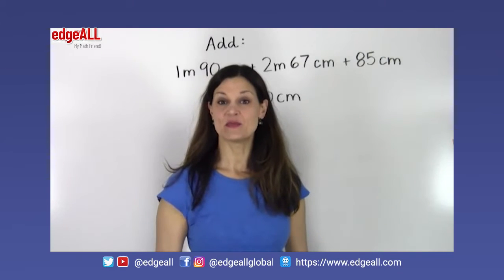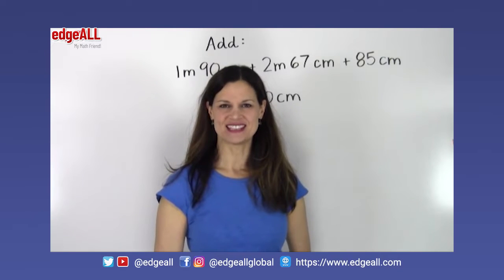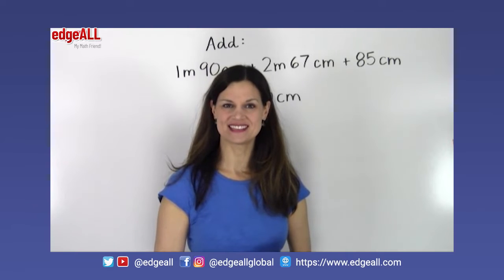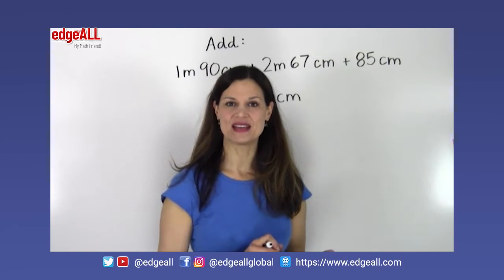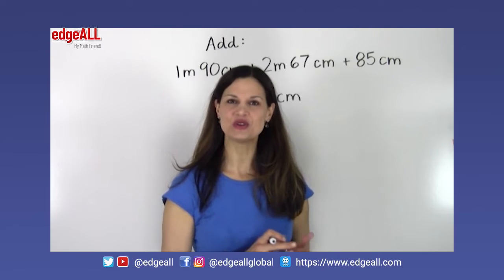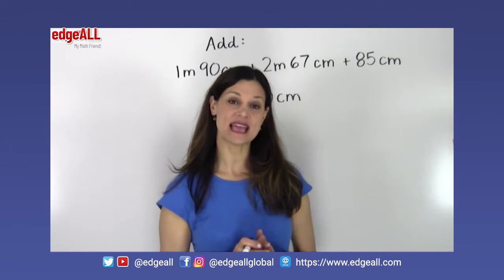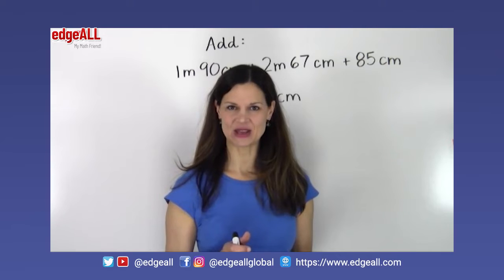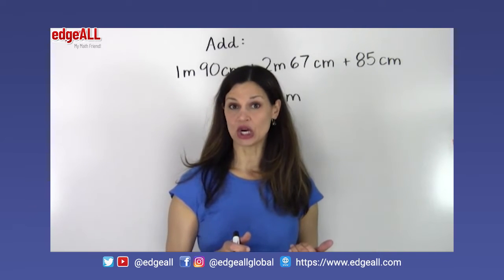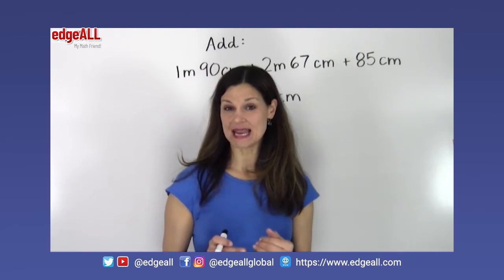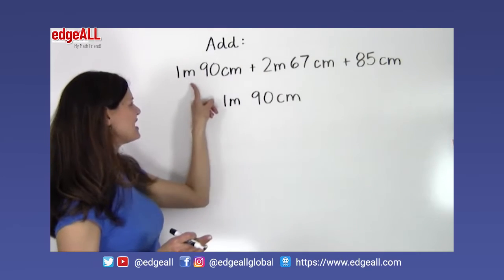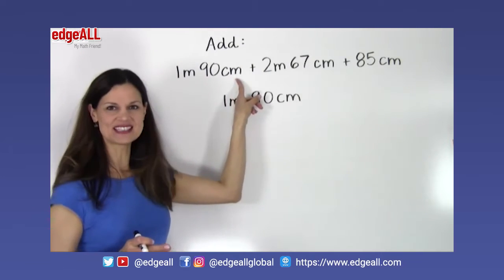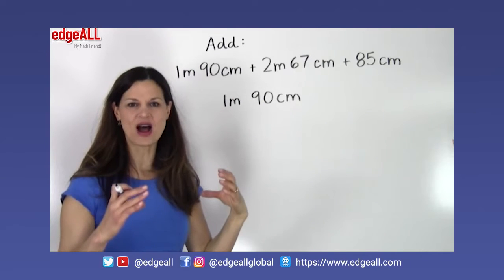Let's take a look at some more difficult unit operations using mixed units. Many times a measurement of one item is written using two units. So for example, the length of a stick could be 1 meter and 90 centimeters, and it would be written like this: 1 meter 90 centimeters. That's the measurement of one object.